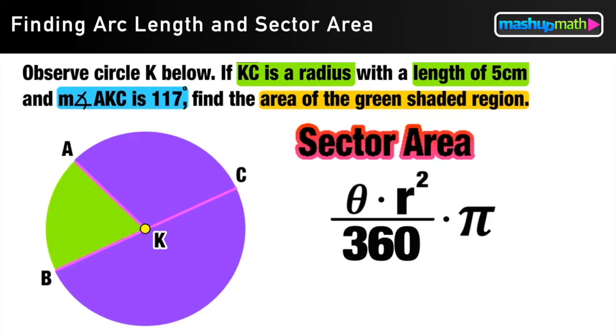So the information that we need is the measure of theta, the central angle within that sector. And we also need R, the length of the radius of the circle.